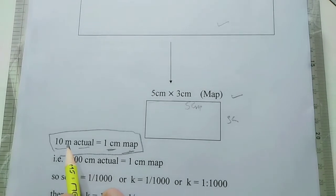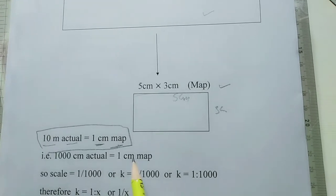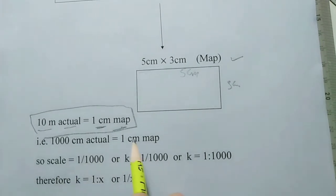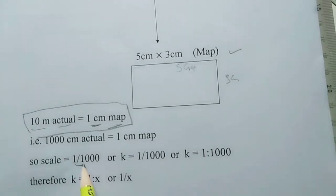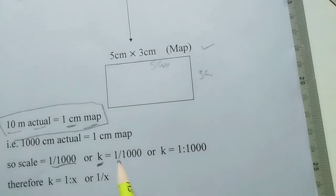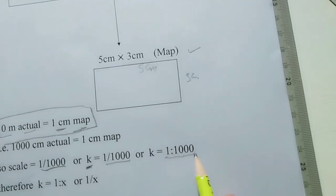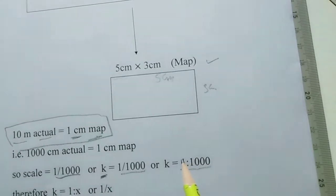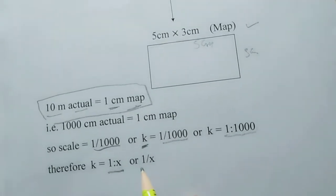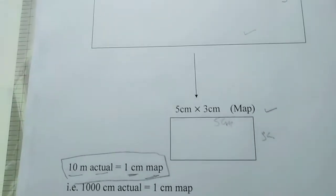If we convert to the same unit, 10 meters equals 1000 centimeters actual, which equals 1 centimeter on the map. So the scale is 1 to 1000, represented as 1 upon 1000. This is called your scaling factor k, which is 1 upon 1000, or 1 ratio 1000. Remember, k will always be in the form of 1 ratio x or 1 upon x.